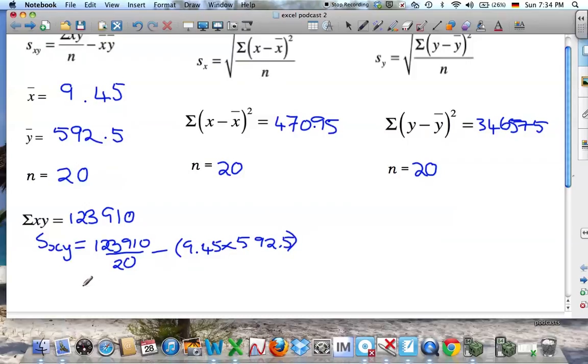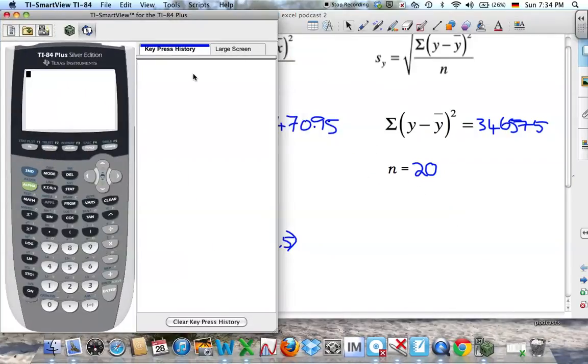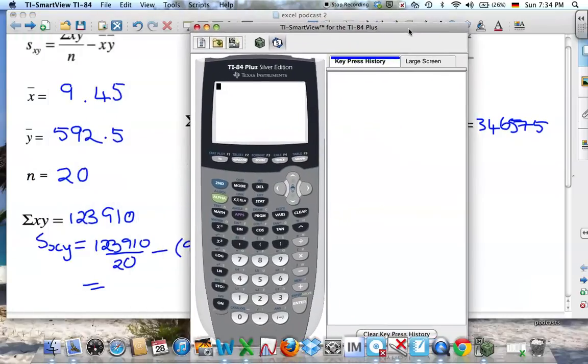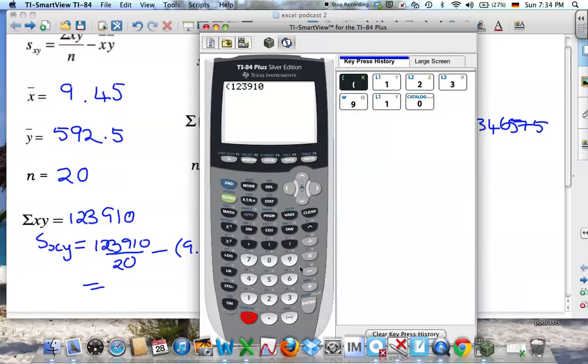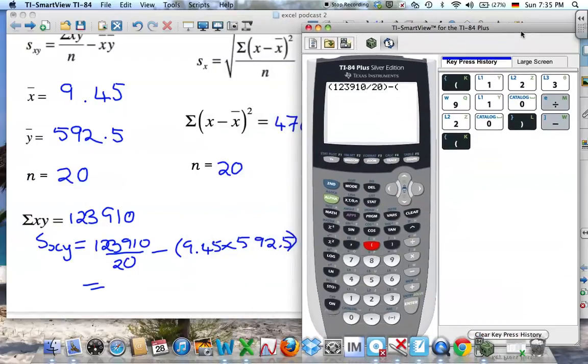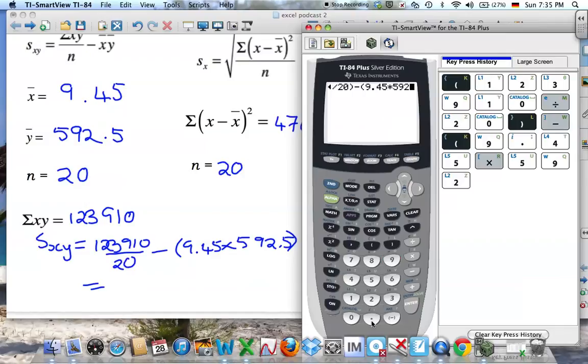Then you can just put that into the calculator. So if we get the calculator up, we want, if I put that in brackets, 123,910 divided by 20 minus, let's just move that across again.